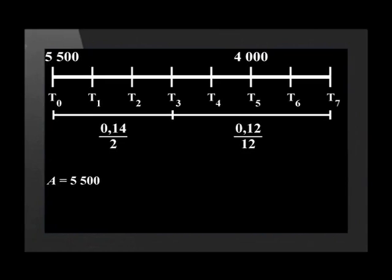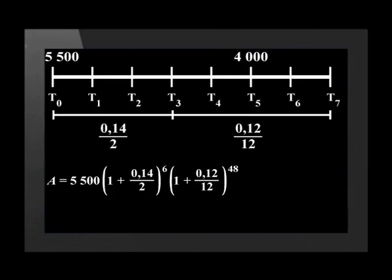The shorter method combines all three calculations into one. Each piece of money has its interest calculated separately and then they are added together. A = 5,500 × (1 + 0.14/2)^6 × (1 + 0.12/12)^48. This part of the calculation gives us the total interest the initial deposit will earn at the end of seven years.